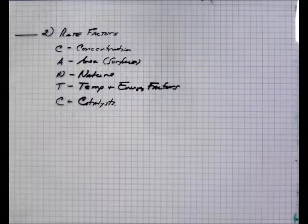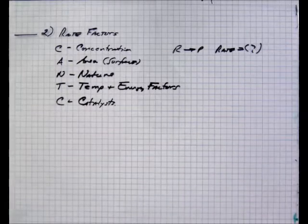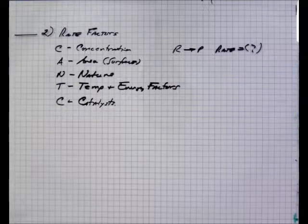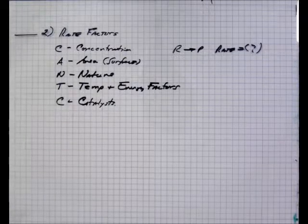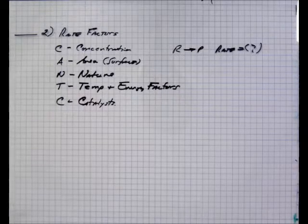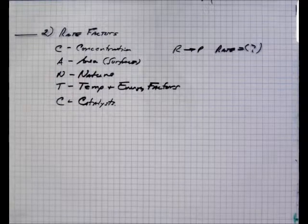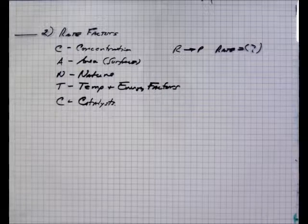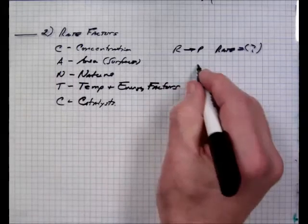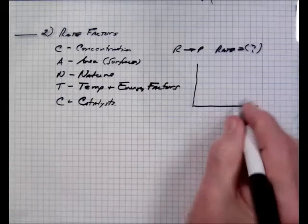Concentration refers to changes in the amount of reactant. If you look at what we call a reference reaction, we have reactants go to product with rate equals whatever. Then we double the concentration of one of the reactant components and see what happens. If the reaction doesn't change at all, we call it a zero order reaction. If we double the concentration and we see a doubling of rate, it's a first order reaction. If we double the concentration and the rate goes up four times, we call it a second order reaction.